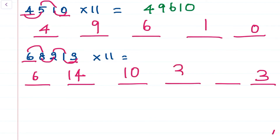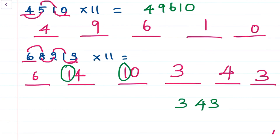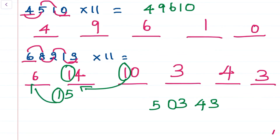Since some middle values are two digits, we handle carries from right to left. Our working gives 3, 4, 3, 0 — then carry 1 added to the 14 gives 15, so we write 5 and carry 1 to 6, giving 7. So our final answer is 750343.